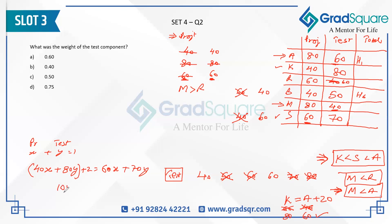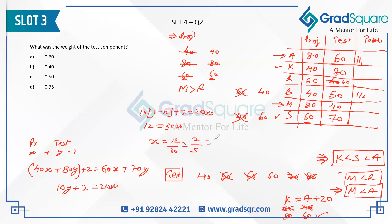Solving: 20x − 10y = 2. Substituting y = 1 − x: 20x − 10(1 − x) = 2 → 20x − 10 + 10x = 2 → 30x = 12 → x = 12/30 = 2/5 = 0.4. So project weight x = 0.4 and test weight y = 0.6.